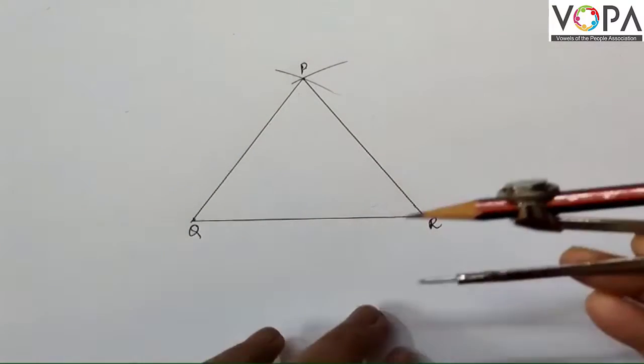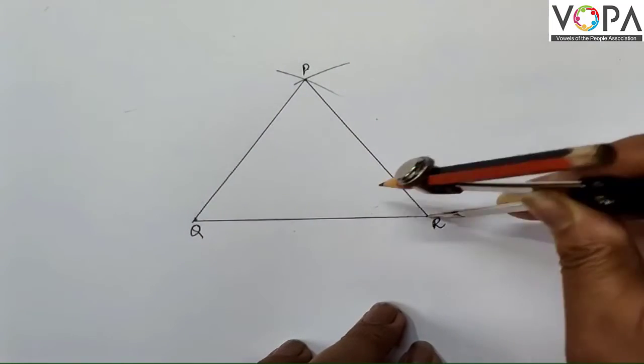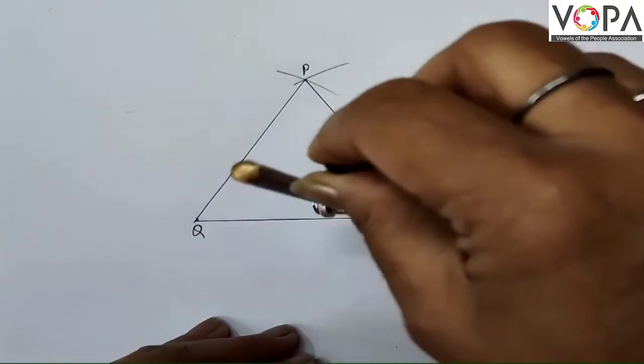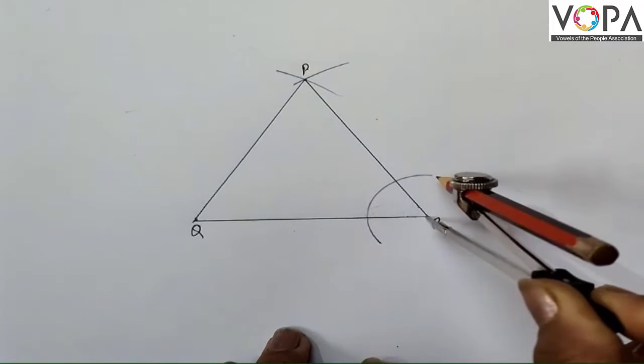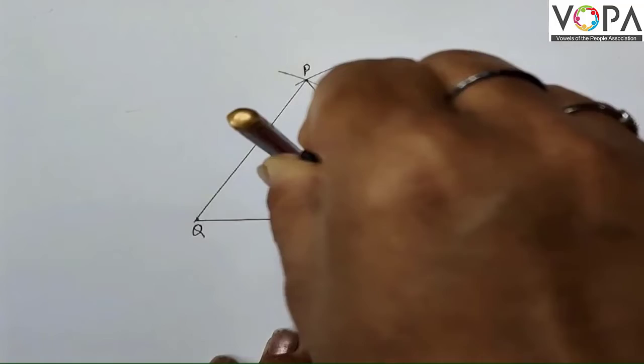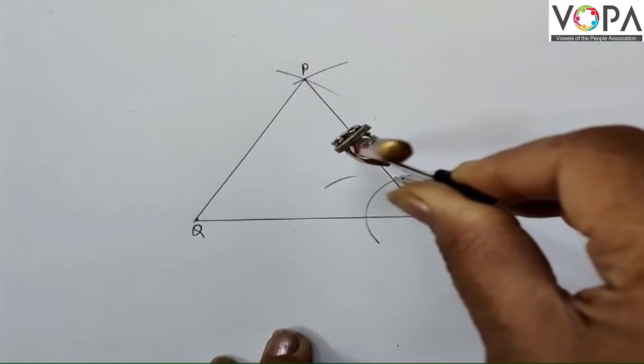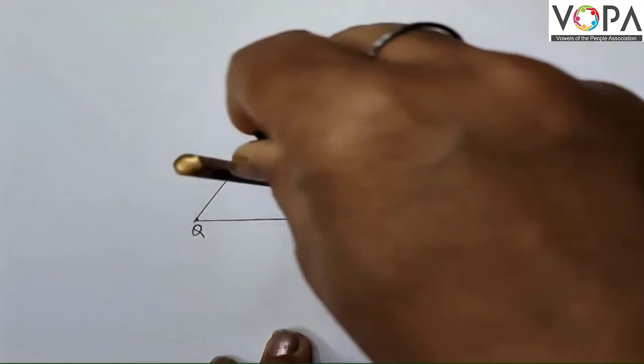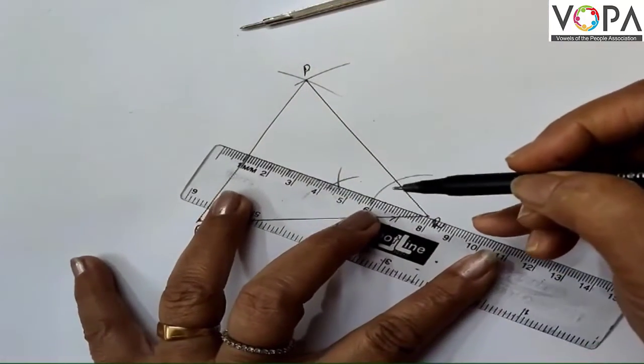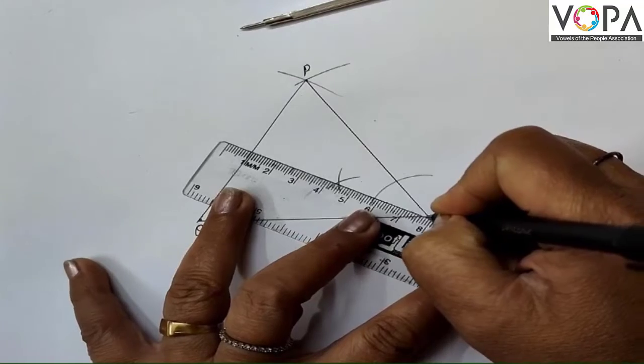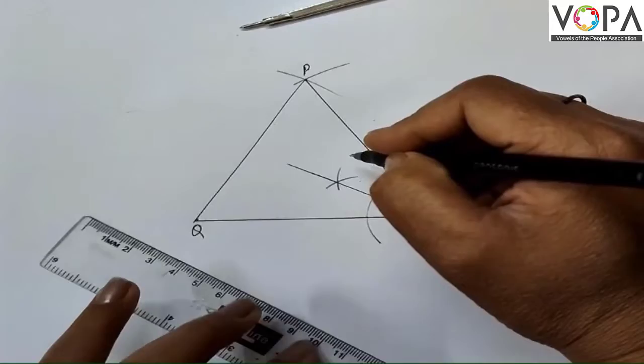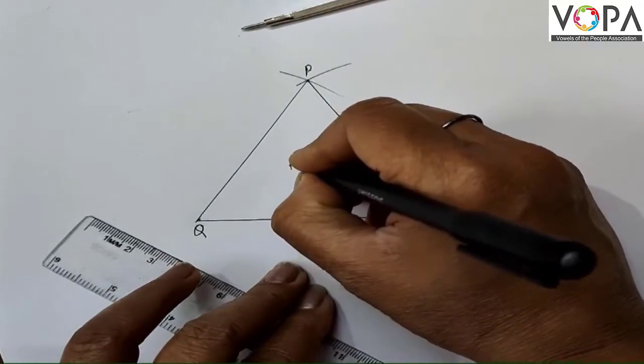Now you have to draw angle bisectors. Keep the compass on R and draw an angle bisector. Draw an arc and from here draw two arcs. Don't change the measurements of the compass. Now join R and this point. You have joined these two now.